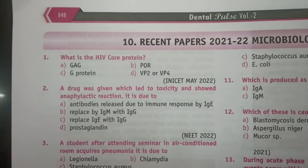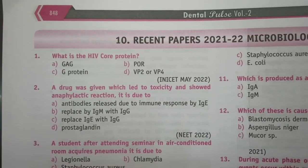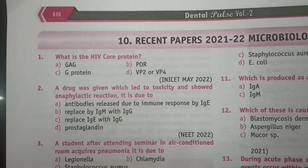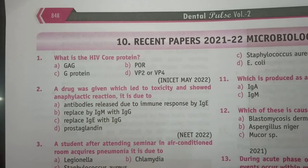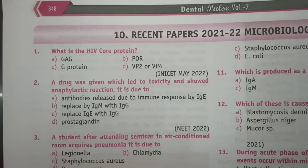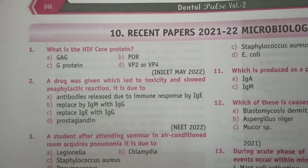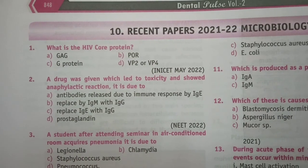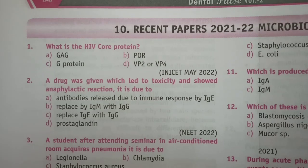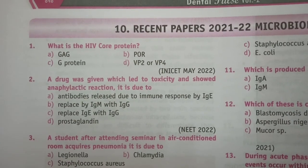Question 2: A drug was given which led to toxicity and showed an anaphylactic reaction. It is due to: Option A, antibodies released due to immune response by IgE; Option B, replaced by IgM with IgG; Option C, replaced IgE with IgG. The answer to question 2 is A — antibodies released due to immune response by IgE.